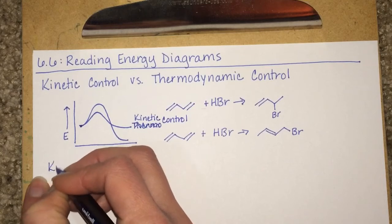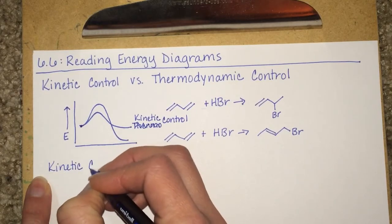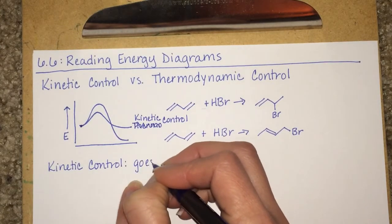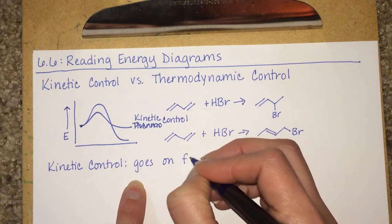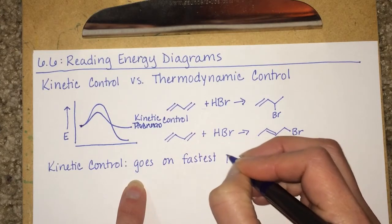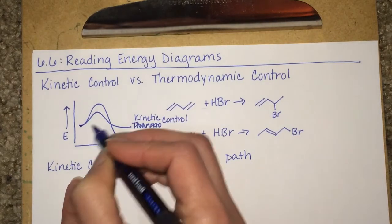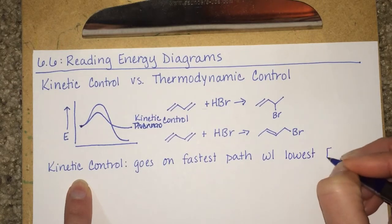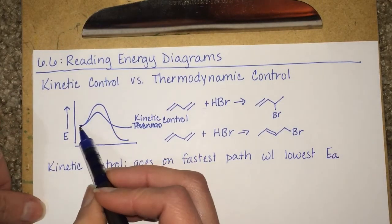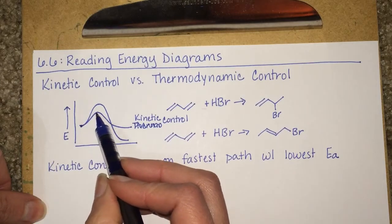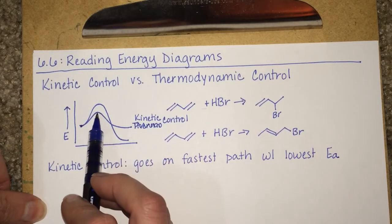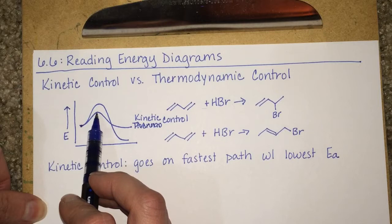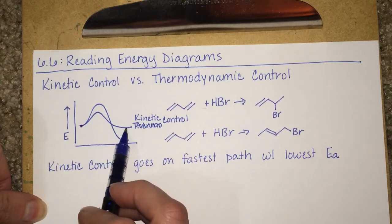A reaction that is under kinetic control is the one that goes on the fastest path. And the one with the fastest path is the one that has the lowest activation energy. It takes a lesser amount of energy to hit the activation energy of this kinetic controlled reaction, which means that the reactants are going to get to this point faster. It's not going to require as much heat, for example, to get to this point. So it's going to happen faster.